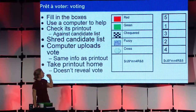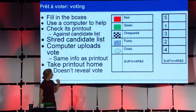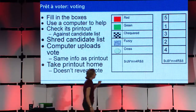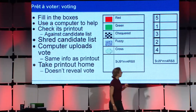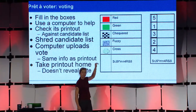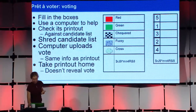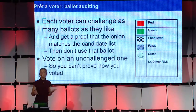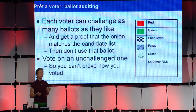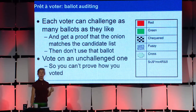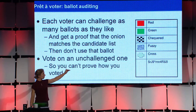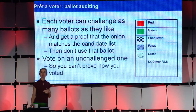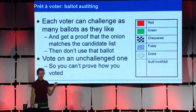The answer is that you can audit. You can at any point challenge as many ballots as you like. You can ask, as soon as you get the ballot, for this ciphertext at the bottom to be decrypted, so that you can walk home with some proof that that ciphertext matches that list of candidates. Then you get another ballot and vote on that ballot instead, because you cannot vote on something that you've challenged — because if you could, you could prove how you voted.